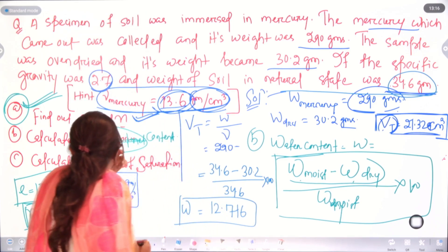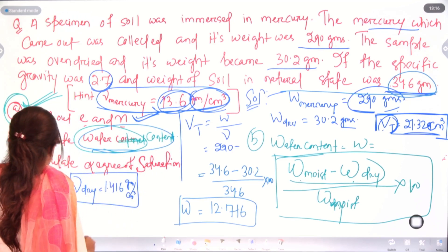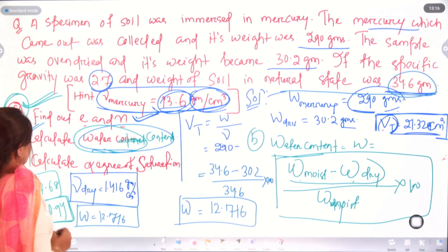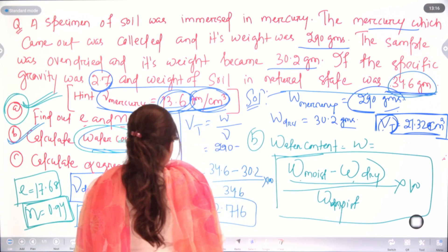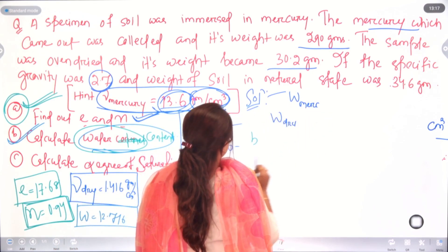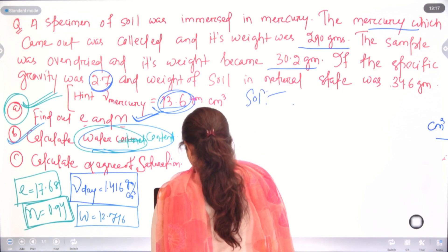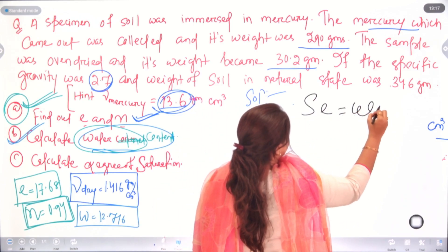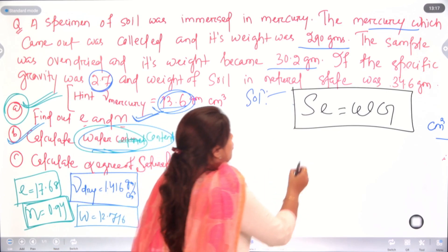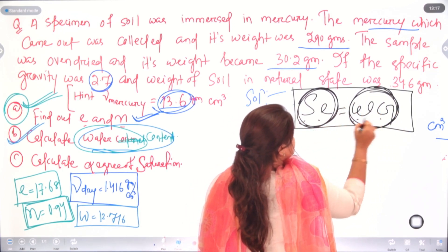We now have the answer for part b — water content of soil is 12.716%. Next we need to calculate the degree of saturation. We use the formula Se = wG. To remember it: the great cricket player says 'work' — just divide the name: S·e = w·G. So S = wG / e.